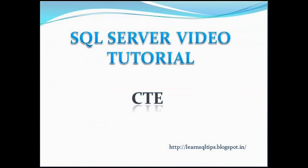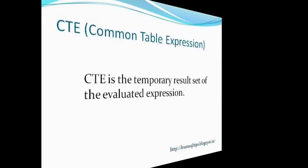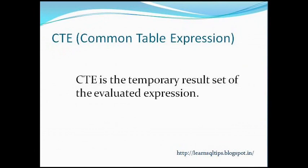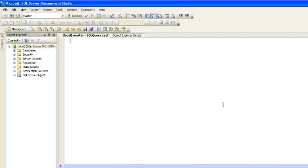Today's topic for our discussion is CTE. So what is CTE? CTE is a Common Table Expression, which means it's a table — in simple words, a table which is based on an expression. The definition for CTE is: CTE is a temporary result set, that is a temporary table, which is the result set of an evaluated expression.